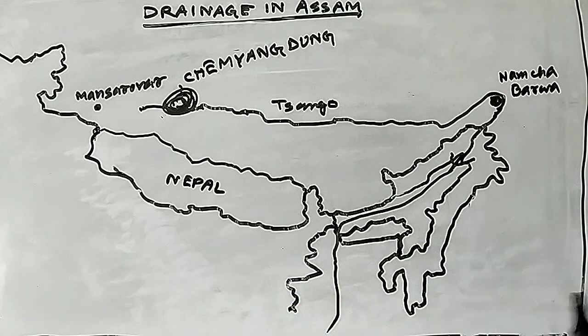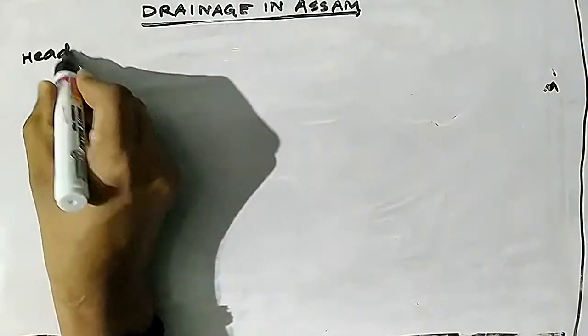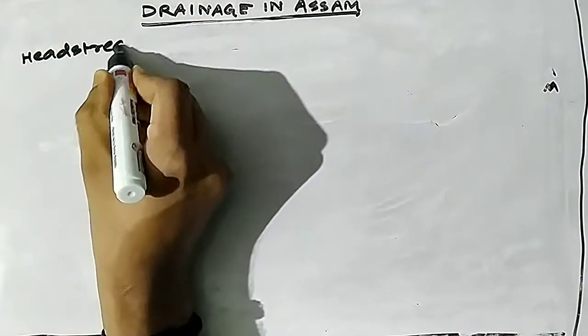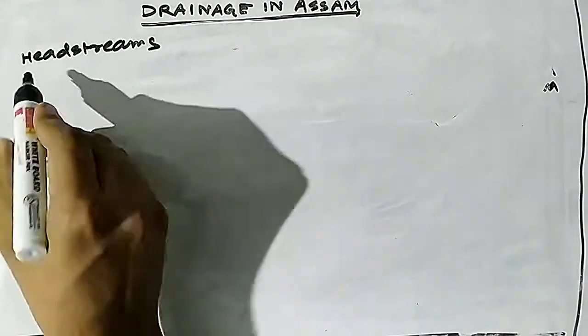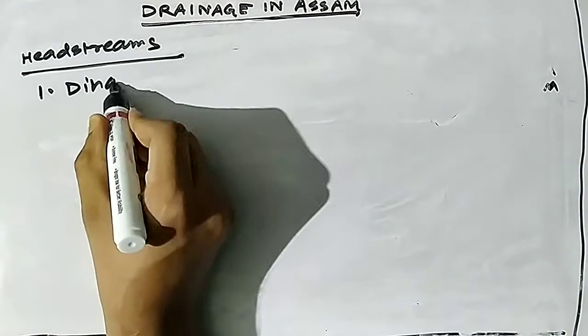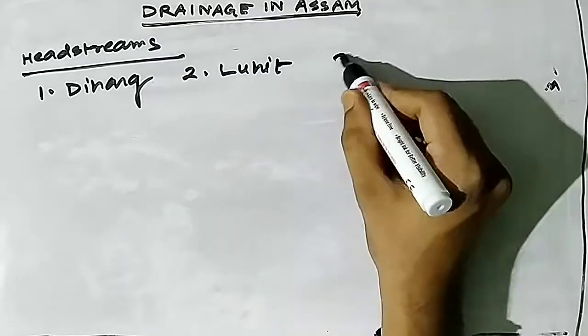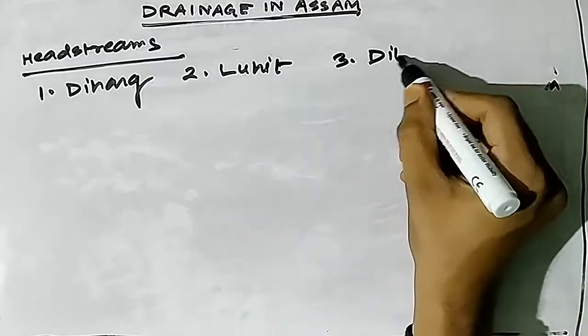The Brahmaputra has about 109 tributaries. Its head streams mainly comprise the Dihang, Dibang, and the Luhit.